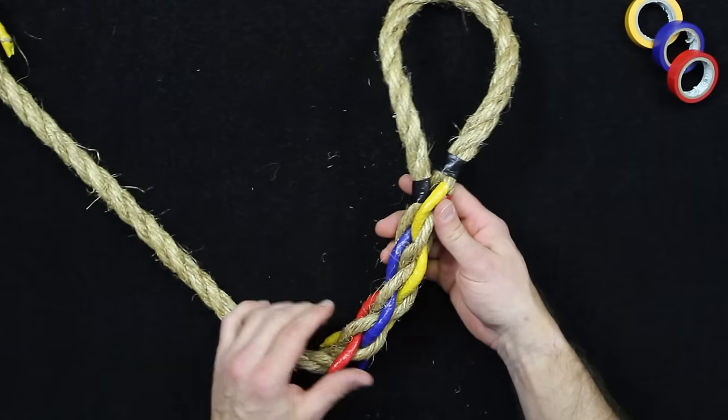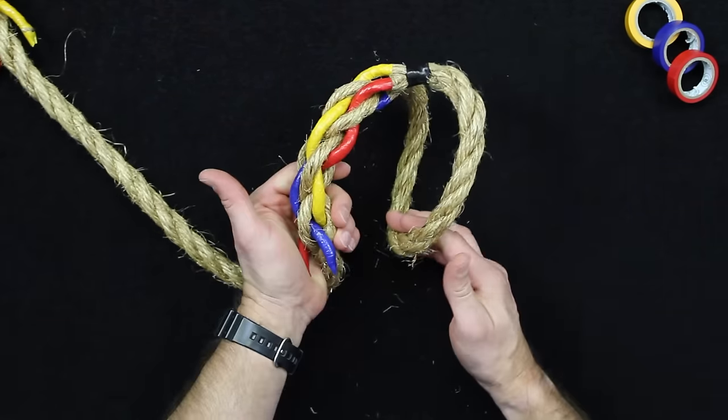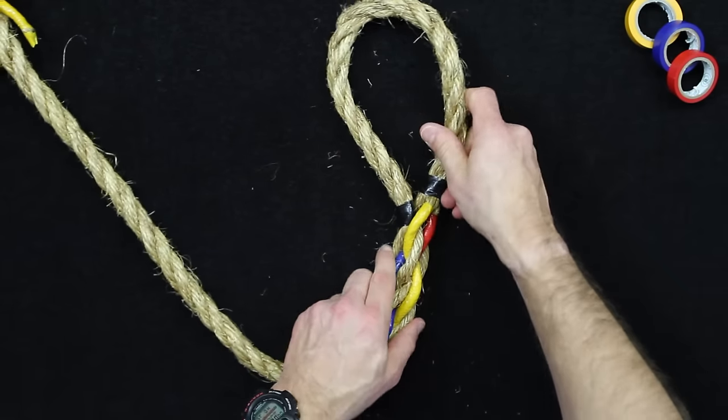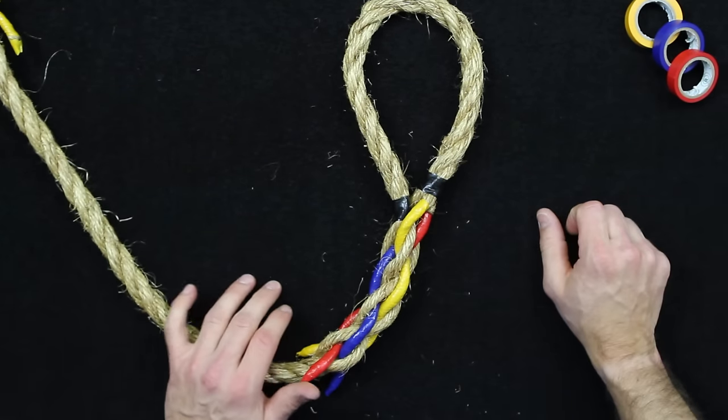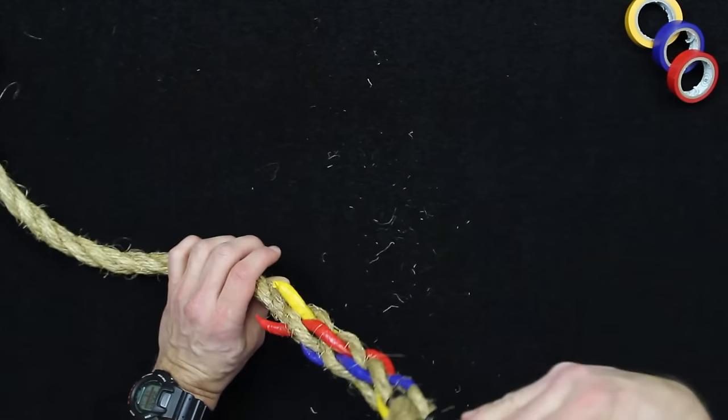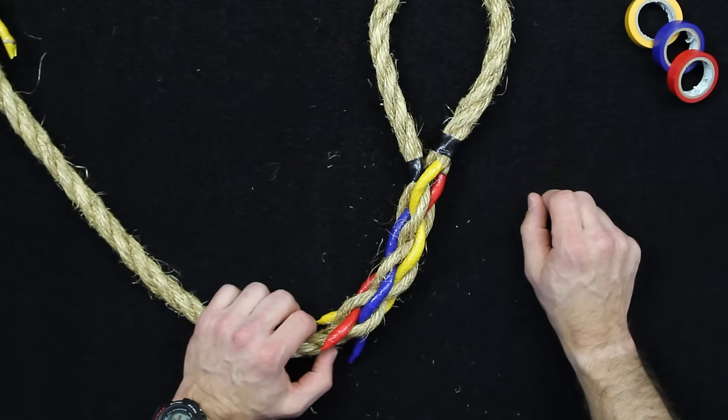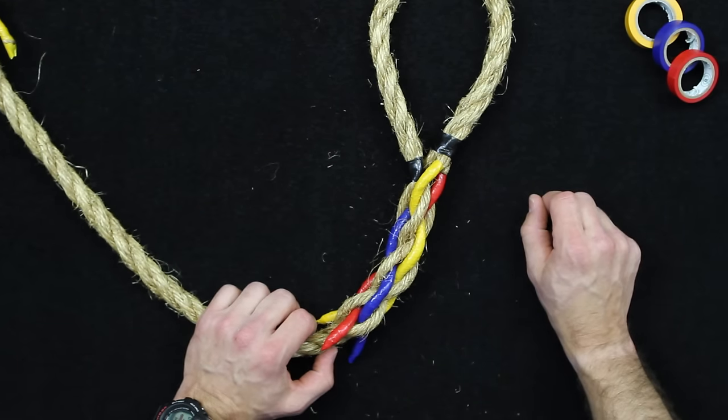But what you've got now is an eye splice, and you can take this other side of the rope now and put it through to actually create something like a cow hitch for hanging a rope or something like that. So this is great for creating your own climbing rope, because then you can throw it over something like that, and now you've got a way to anchor it. And that is how to tie the eye splice.